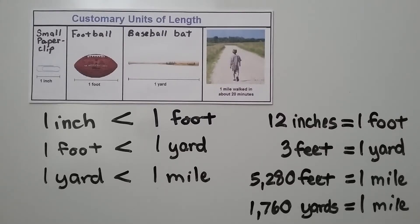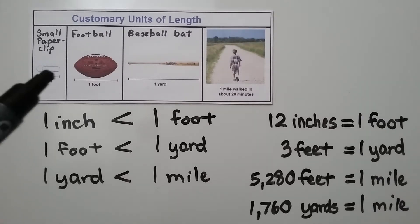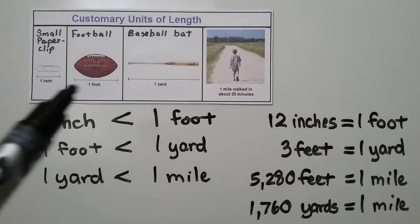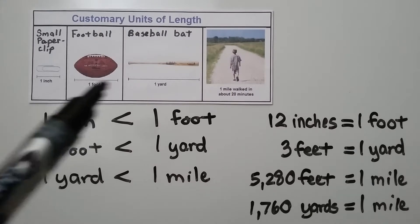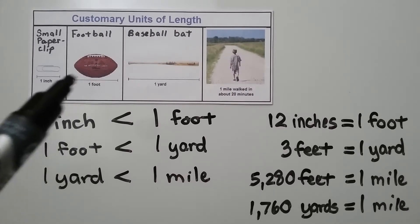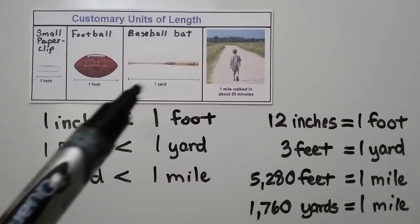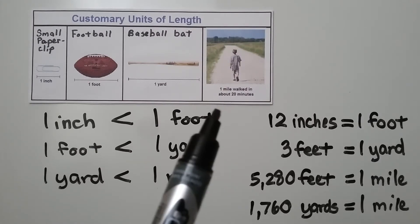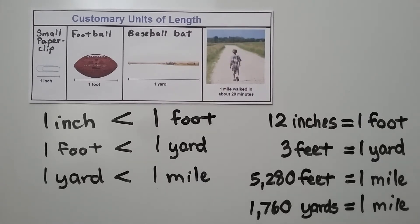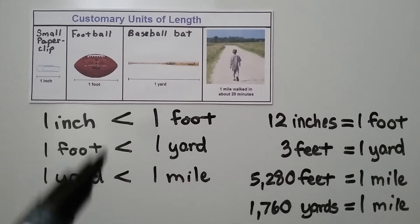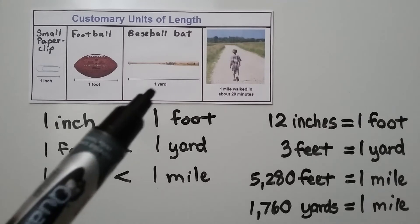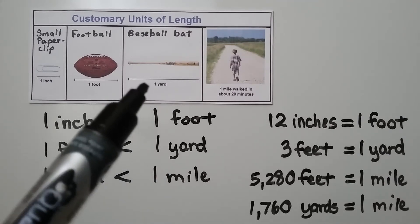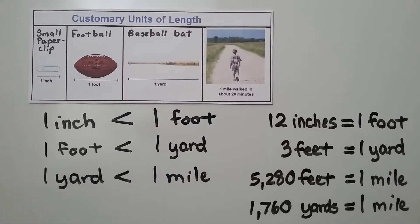For customary units of length, one inch is about the length of one small paperclip. One foot is about the length of a football. One yard is about the length of a baseball bat. And one mile can be walked in about 20 minutes. So one inch is less than one foot, one foot is less than one yard, and one yard is less than one mile.